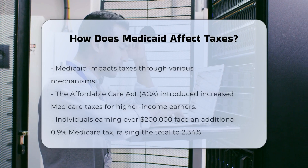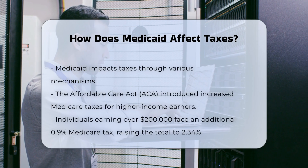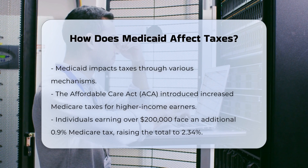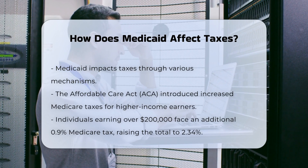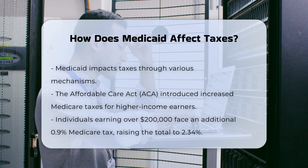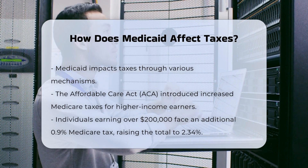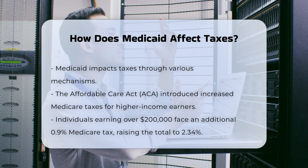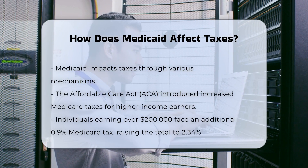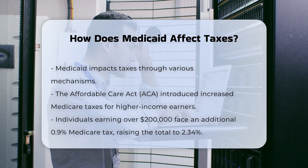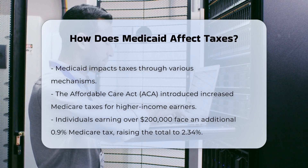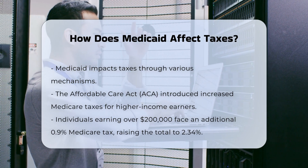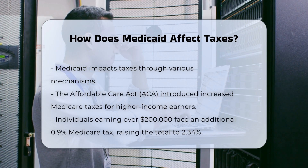When it comes to Medicaid and its impact on taxes, there are several key points to consider. Increased Medicare taxes: The Affordable Care Act (ACA) introduced changes that affect higher income taxpayers. If you earn more than $200,000 as an individual, $120,000 as a married person filing separately, or $250,000 as a joint filer, you'll pay an additional 0.9% in Medicare taxes on your earned income. This brings the total Medicare tax rate to 2.34% from the standard 1.45%.